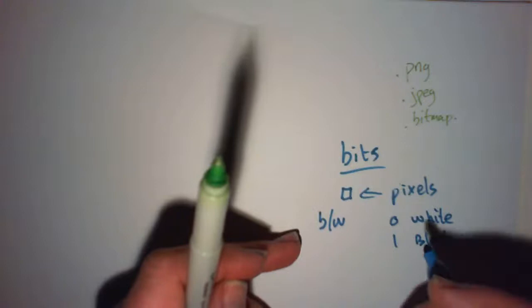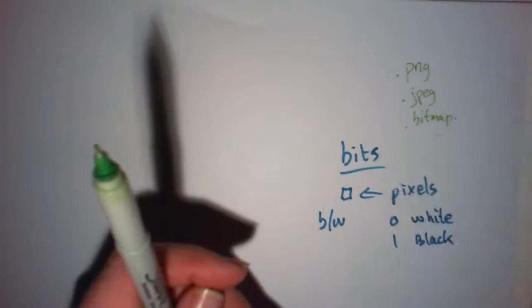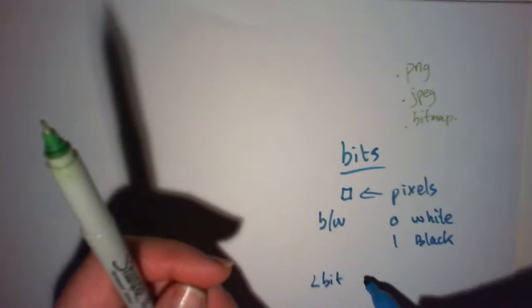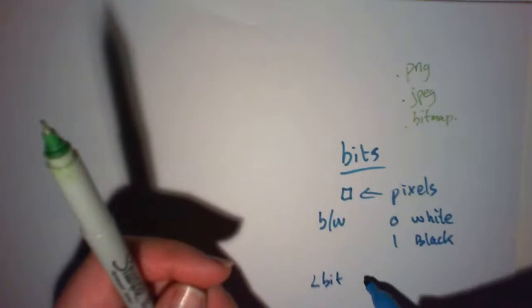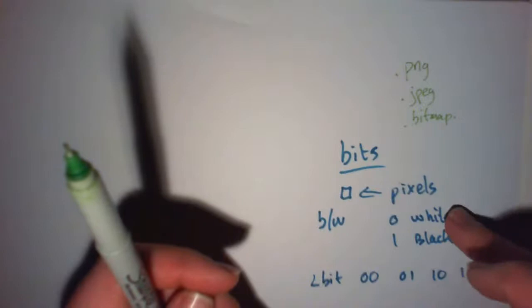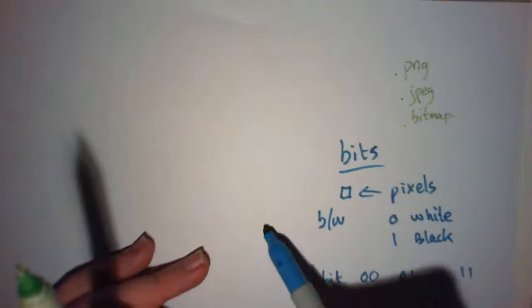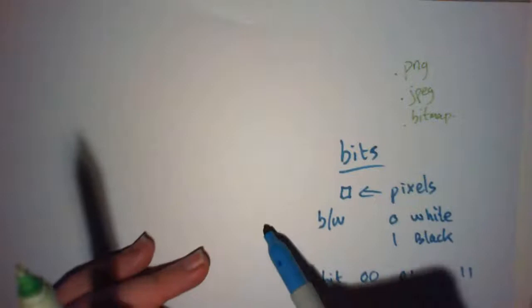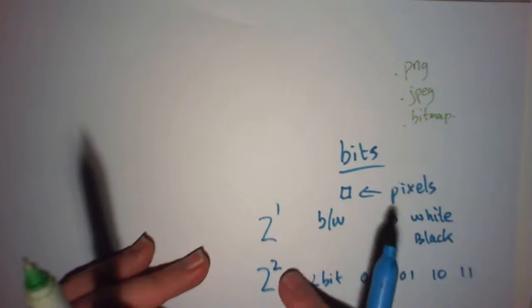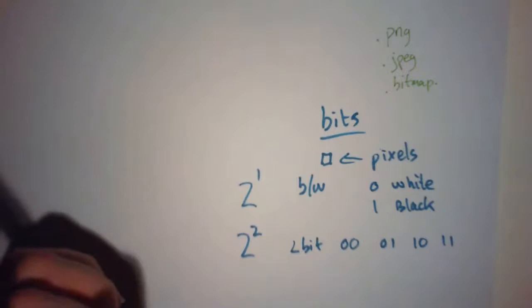Two-bit images can have variables of 00, 01, 10, and 11. So with a two-bit image you have four possibilities, with a one-bit image you have two possibilities. This is 2 to the power of 1, 2 to the power of 2. That's the number of possible colors you can have.